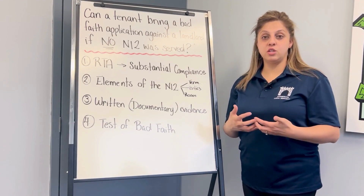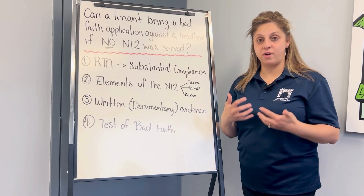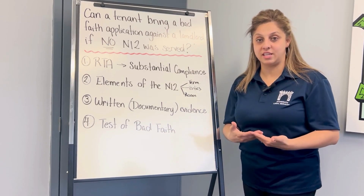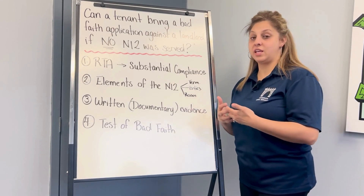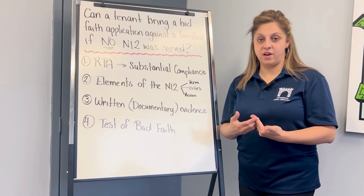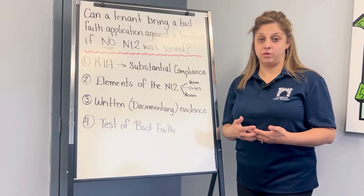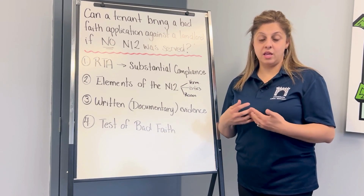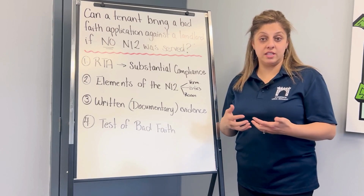This is a question that we're getting asked all the time, because we're finding that landlords are trying to end the tenancy without actually using the N12. And when the tenant moves out and finds out that the landlord didn't move in, or didn't have a family member move in, they bring a bad faith application against the landlord.